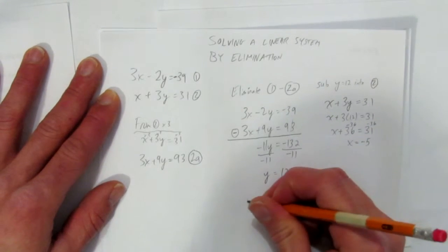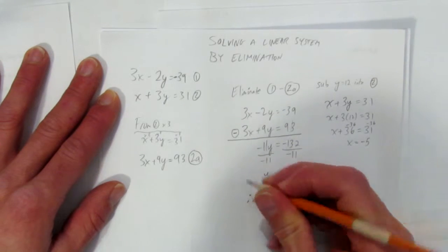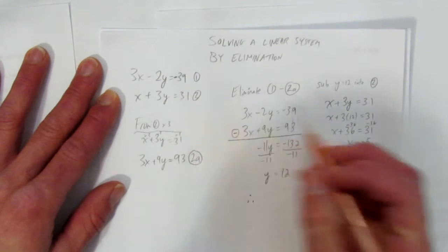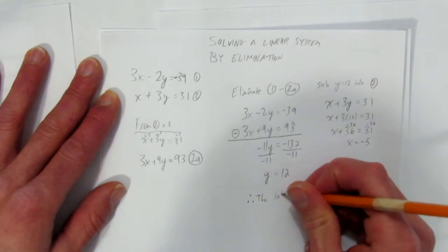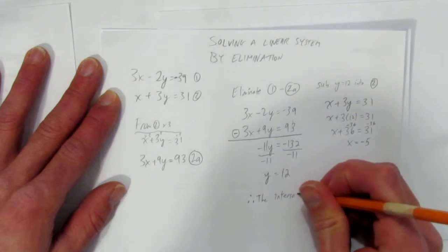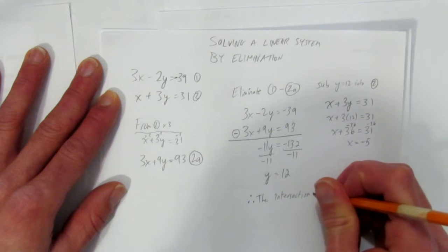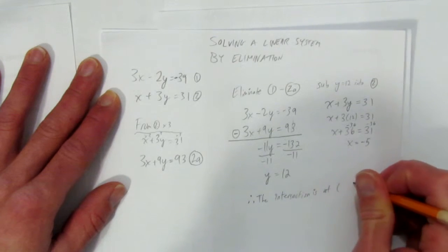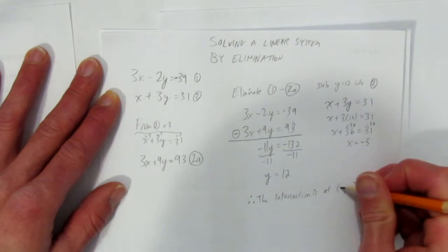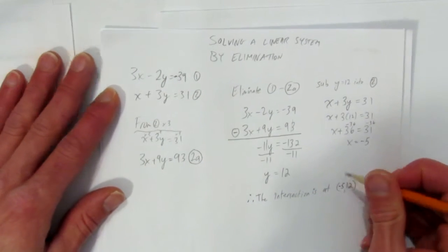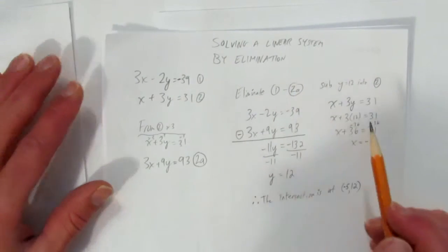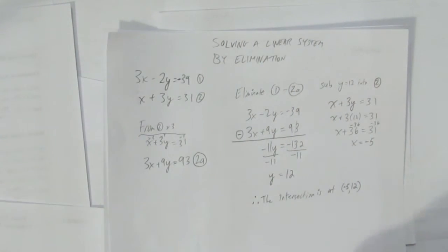So what have we done? We've solved this linear system, that is, this line and this line have an intersection at this point. Let's write this down. The intersection, or the solution, is at x comma y. What's the x? Negative 5. What's the y? 12. And we've solved this linear system, that is, we found the point of intersection, by elimination.